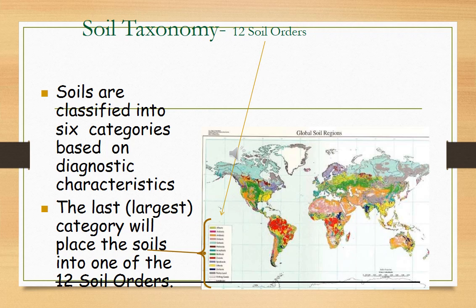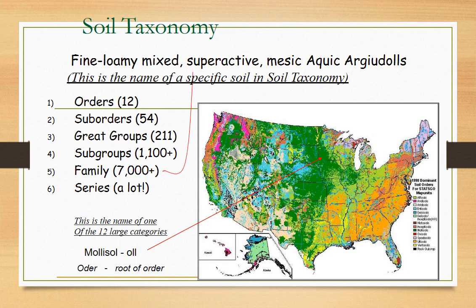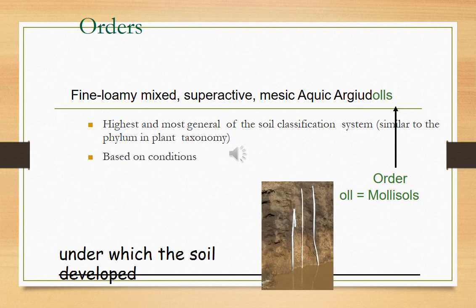Soils are classified into six categories based on diagnostic characteristics. The largest category places the soils into one of the 12 soil orders. There are 12 orders, 54 suborders, 211 great groups, 1100 plus subgroups, 7000 plus families, and a lot of series in soil taxonomy.